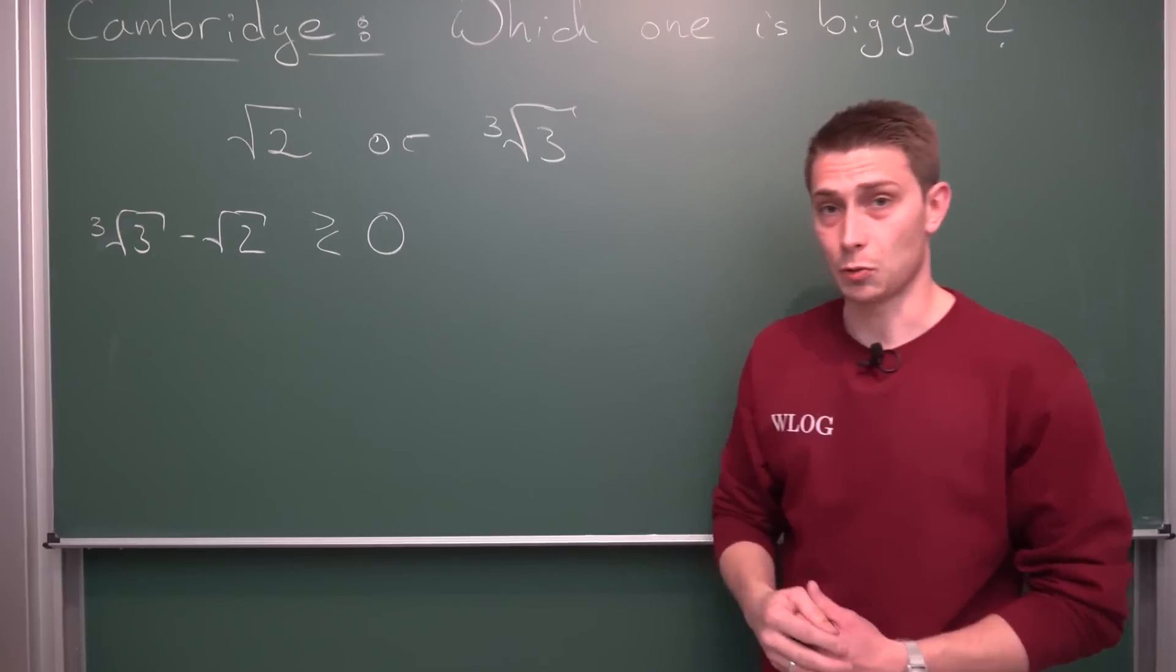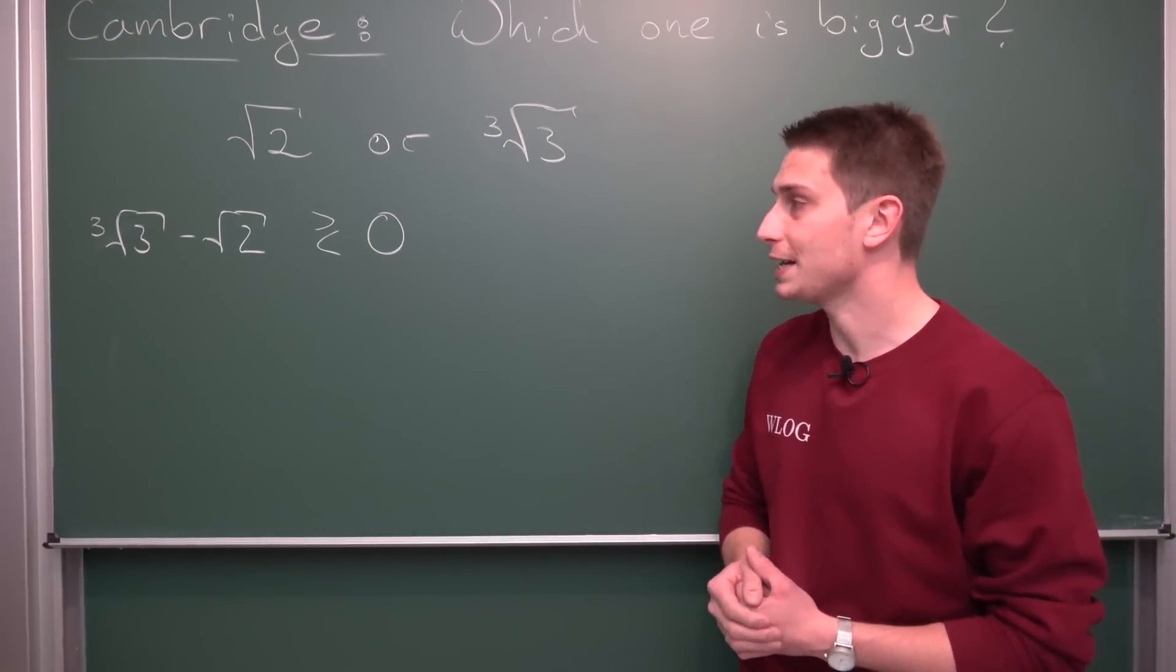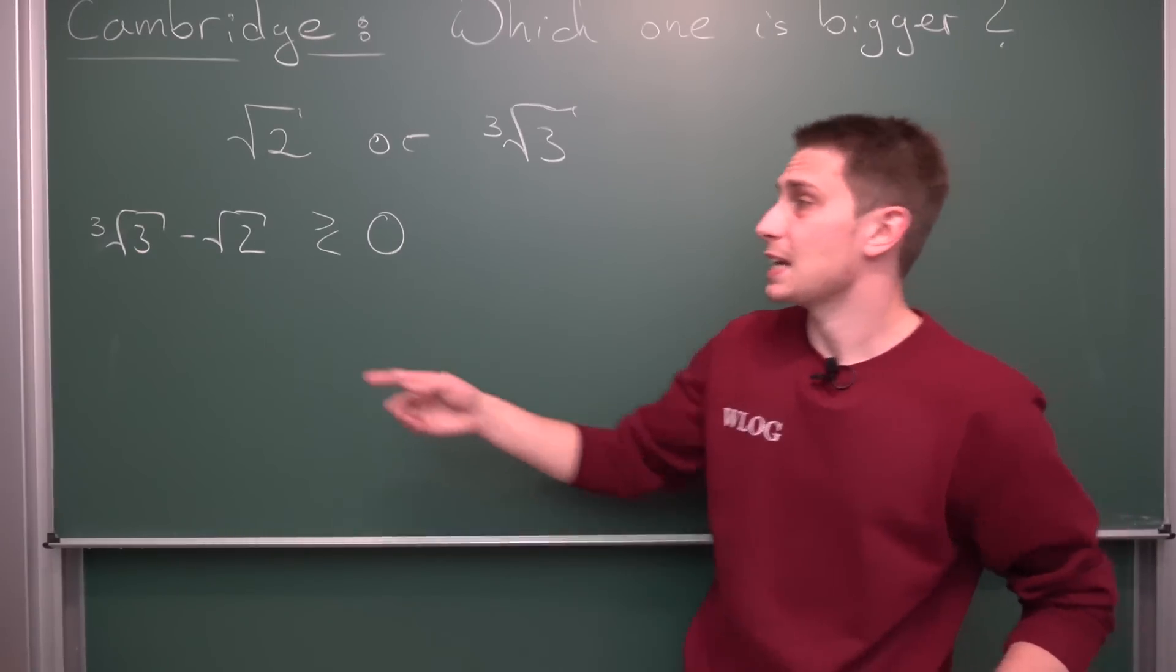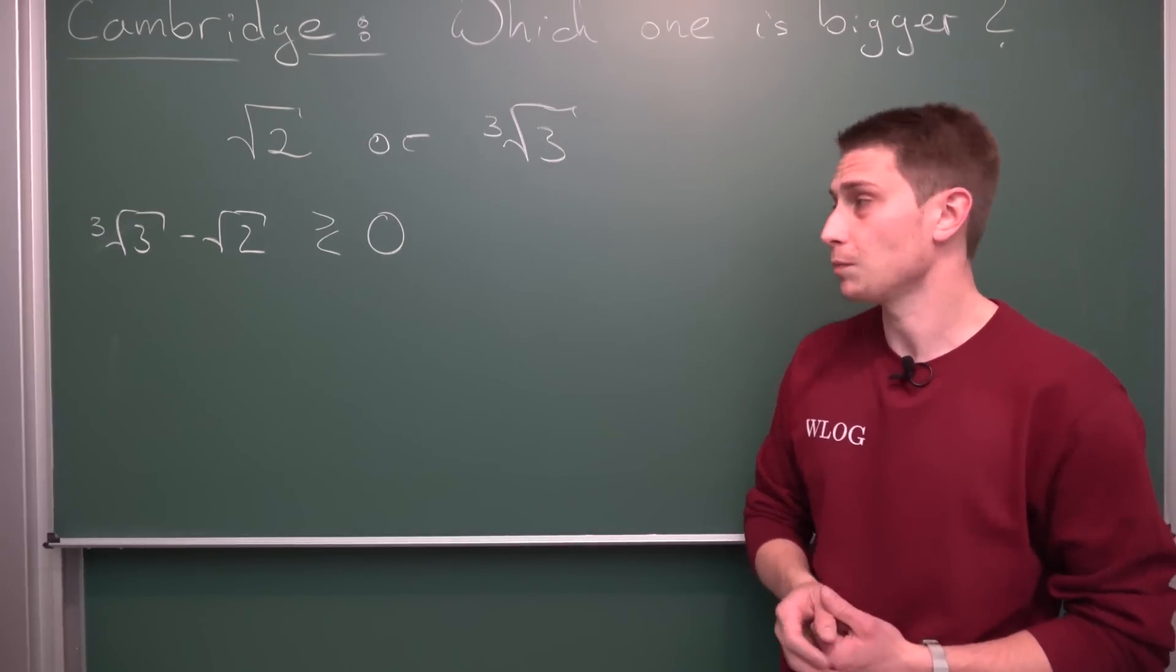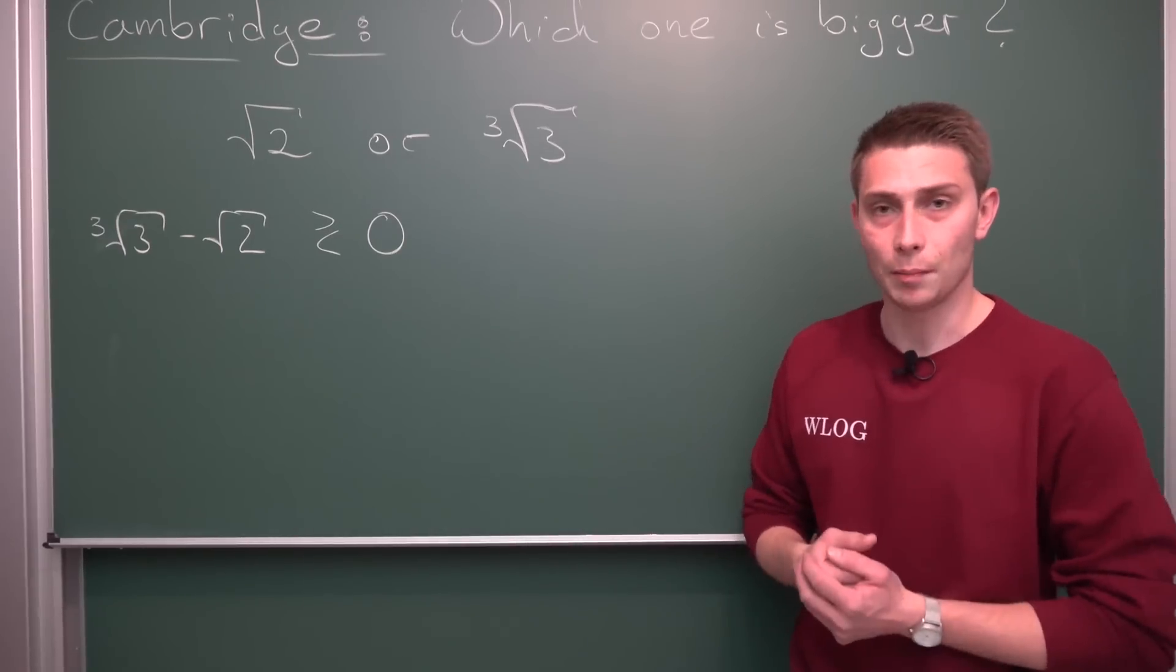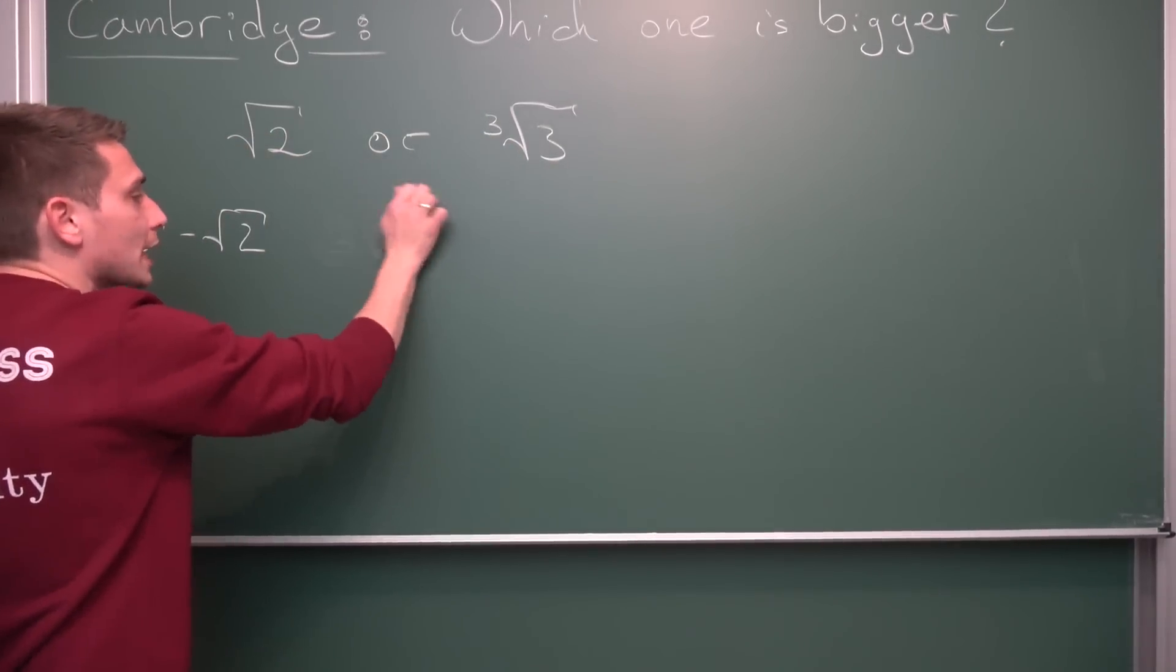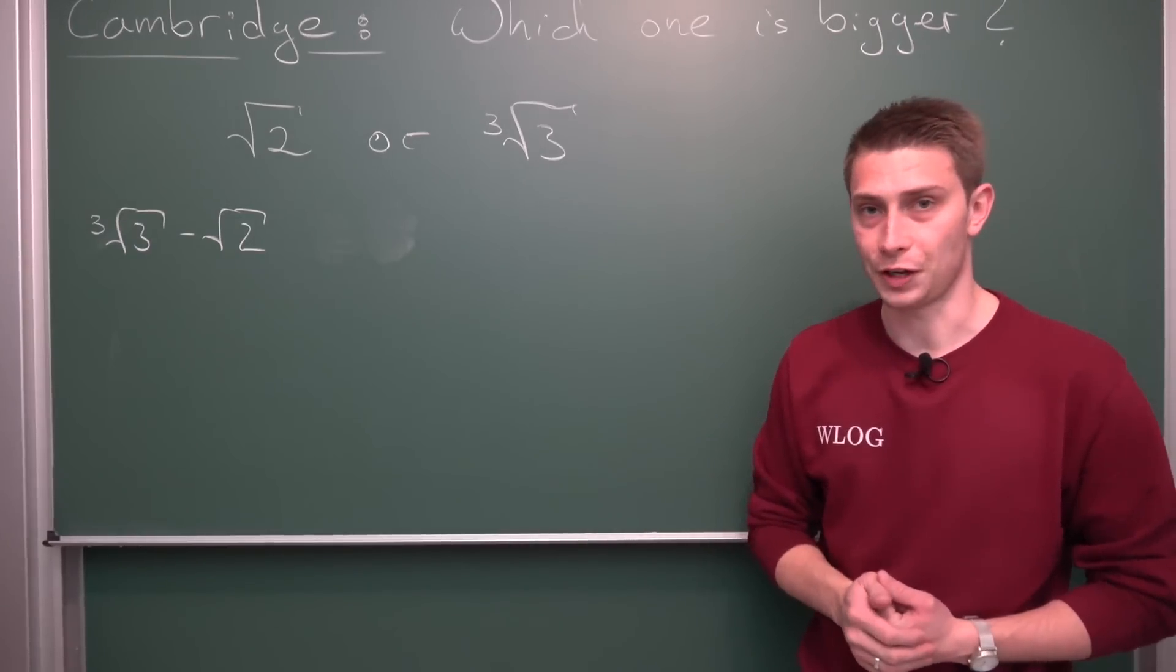Because what we can do is we can actually find out if this difference is greater or less, we don't know yet, than 0. If it were greater or less than 0, if we were to find this fact out, one of either, then what we could do is we could add the square root of 2 on both sides, giving us that either the cube root of 3 is greater or strictly less than the square root of 2. And this is our mission right here and it's a very elegant way.